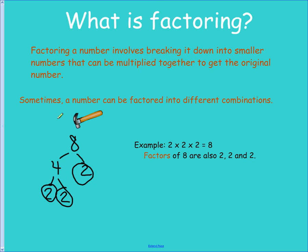So, factoring. Sometimes a number can be factored into different combinations. What we're doing when we're factoring is breaking it down into smaller numbers that can be multiplied together to get the original number. So our example here is 8. To make an 8, I multiply 4 times 2. 2 is prime, so we leave it alone. To get 4, I multiply 2 times 2. So my factors of 8 are 2, 2, and 2. 2 times 2 is 4, 4 times 2 is 8.